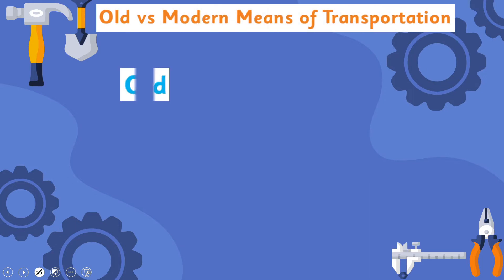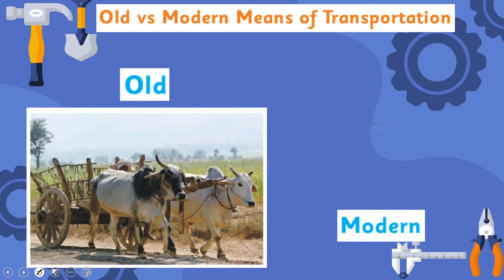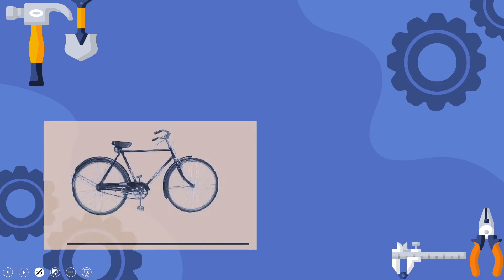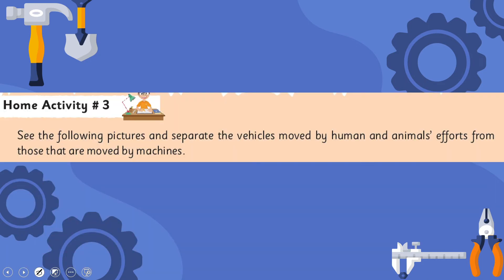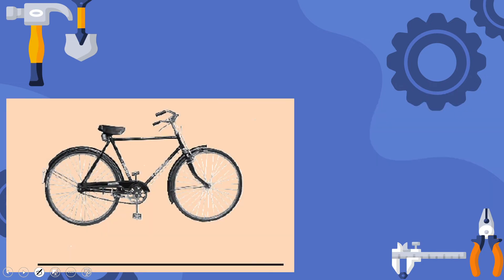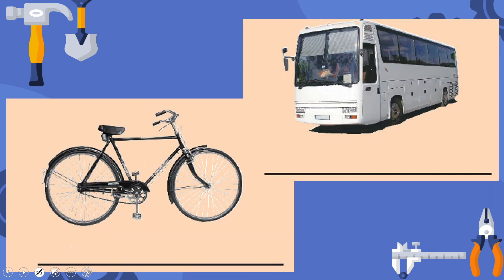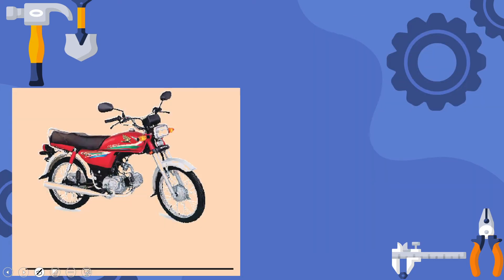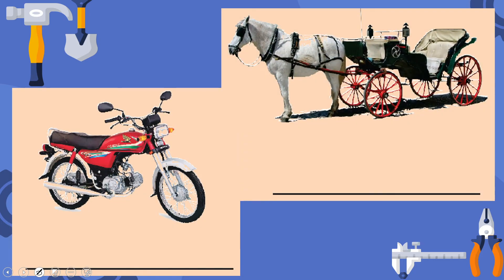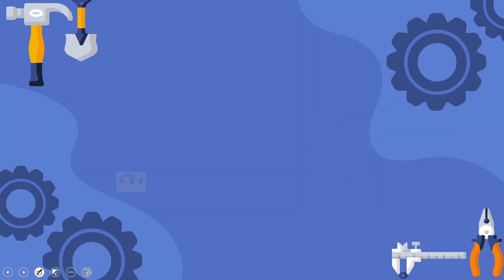Old versus new transportation — this is old and this is modern transportation. Your question is: see the following pictures and separate the vehicles moved by human and animal efforts from those moved by machines. You can see a bicycle and a bus — one is led by humans and the other by machinery. You can also see a tonga, which is animal-driven, and a motorbike, which is machine-driven.